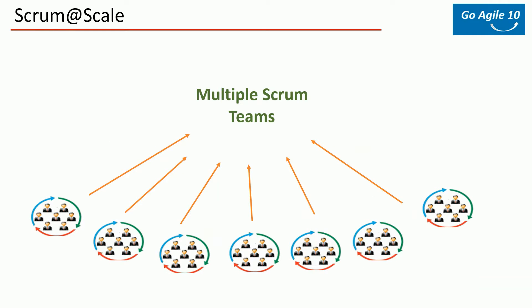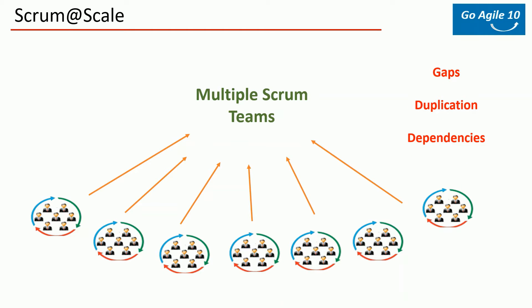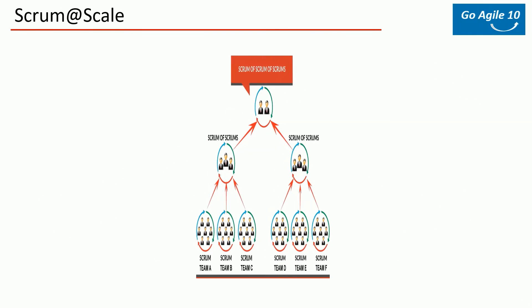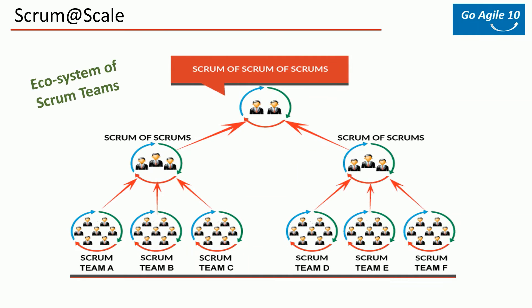Some companies tried running multiple scrum teams, but due to interdependencies, duplication of work, or lack of prioritization across teams, things didn't go well. Speed and quality of output took a hit. To overcome this, Scrum at Scale was developed. One of the main objectives is that as you add more teams, delivery output should increase, and the ability to respond to change should also increase.